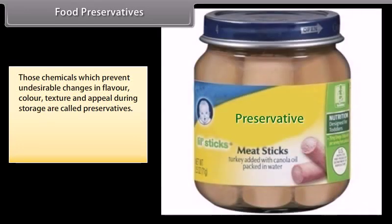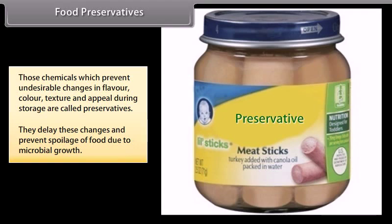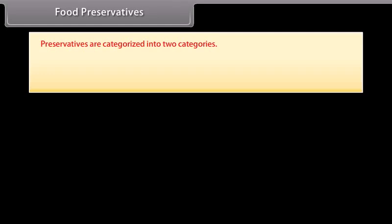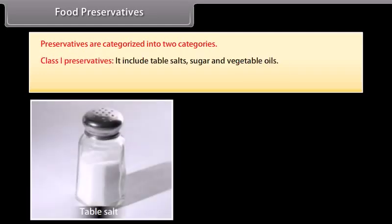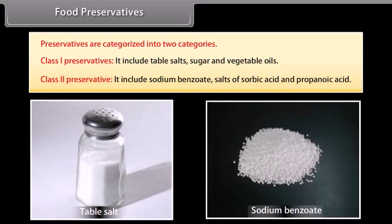Food preservatives: chemicals which prevent undesirable changes in flavor, color, texture, and appeal during storage are called preservatives. They delay these changes and prevent spoilage of food due to microbial growth. Preservatives are categorized into two categories: Class 1 preservatives include table salt, sugar, and vegetable oils; Class 2 preservatives include sodium benzoate, salts of sorbic acid, and propanoic acid.